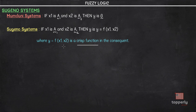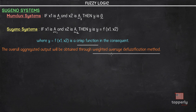Now, f(x1, x2) can be any general function as long as it describes the output of the system within the fuzzy region as specified in the antecedent of the rule to which it is applied. A very important thing to note in Sugeno systems is that each rule will have a crisp output given by a function, so the overall aggregated output is obtained through the weighted average defuzzification method. Let me represent this graphically so you can get a better idea.